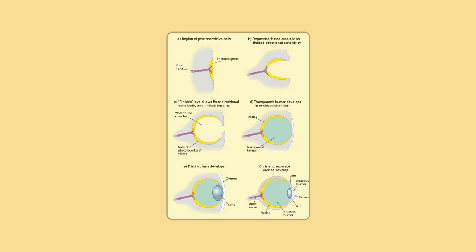The optokinetic reflex, or optokinetic nystagmus, stabilizes the image on the retina through visual feedback. It is induced when the entire visual scene drifts across the retina, eliciting eye rotation in the same direction and at a velocity that minimizes the motion of the image on the retina. When the gaze direction deviates too far from the forward heading, a compensatory saccade is induced to reset the gaze to the center of the visual field. For example, when looking out of the window at a moving train, the eyes can focus on the train for a short moment by stabilizing it on the retina until the train moves out of the field of vision, at which point the eye is moved back to where it first saw the train through a saccade.